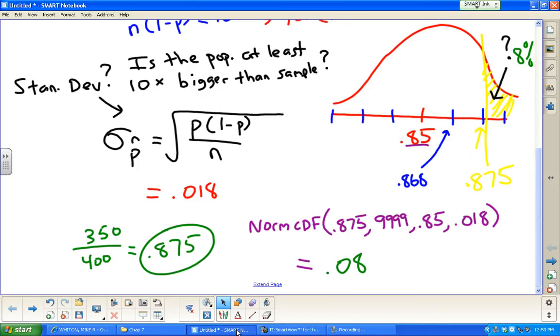About 8% chance that this thing gets overbooked. So the airline would have to decide, is it worth it? 8% of the time in the long run, they're going to be overbooked. If you're selling 400 tickets and 350 people show up, 8% of the time you're overbooked, 92% of the time things work fine. So the company would have to decide, is this worth it or not?